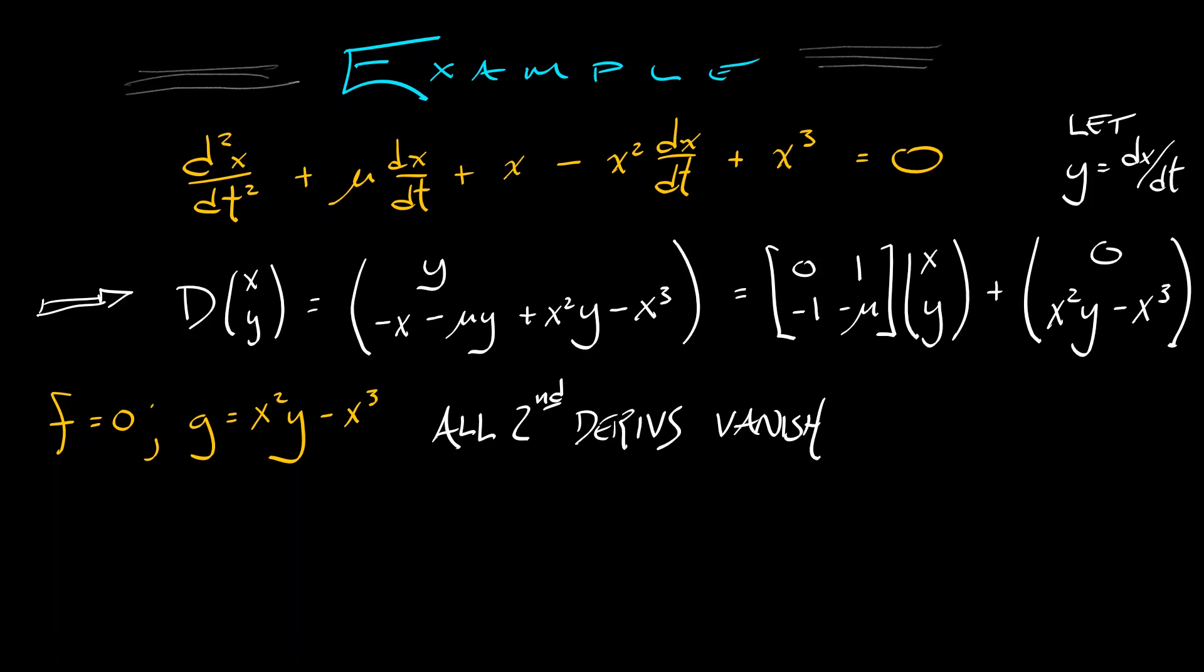And the only third derivatives that I have to compute for that criterion are g xxy, which is two, and g yyy, which is zero.